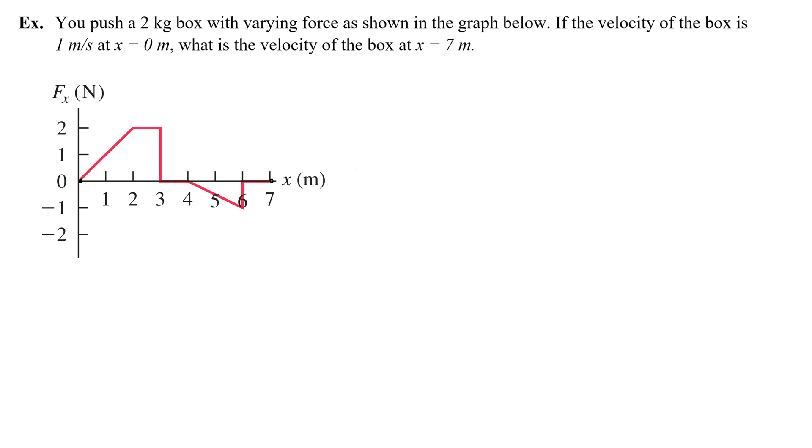Let's do an example. Here you have a two kilogram box pushed with a varying force as shown in the graph below. If the velocity of the box is one meter per second at zero meters, what's the velocity of the box at seven meters? Okay, so here, in the beginning, you have an initial velocity of one meter per second. So, your kinetic energy at that point is half of the mass, two kilograms, times the velocity squared, one meter per second squared. So, half of two is one times one squared, it's still one. This is one joule of kinetic energy.